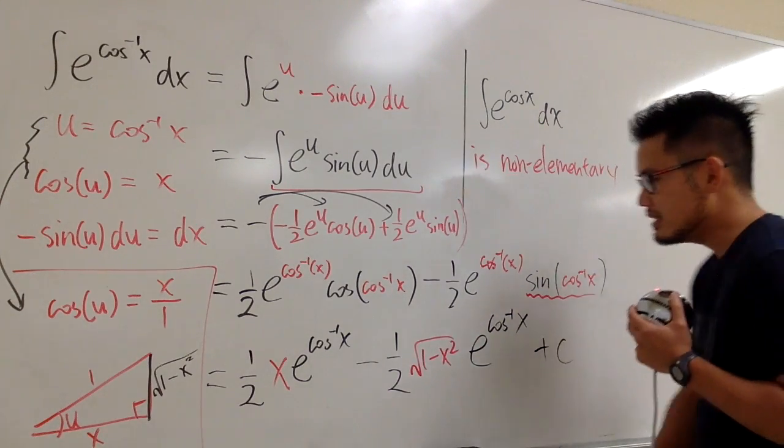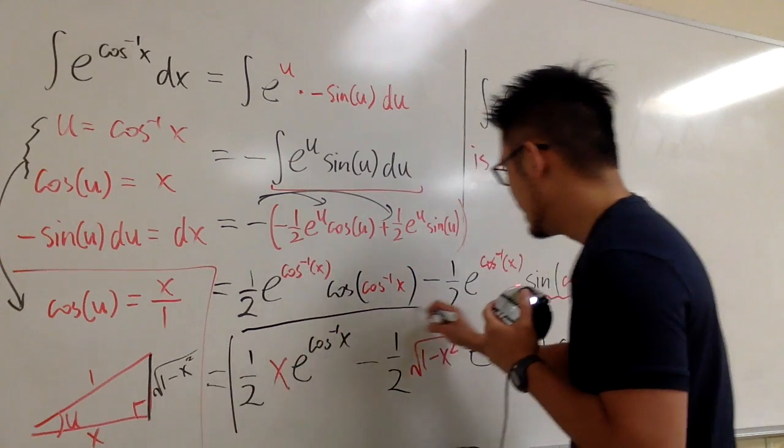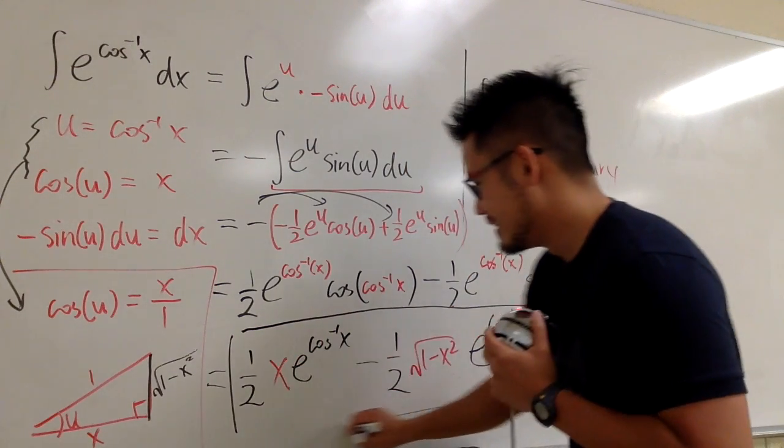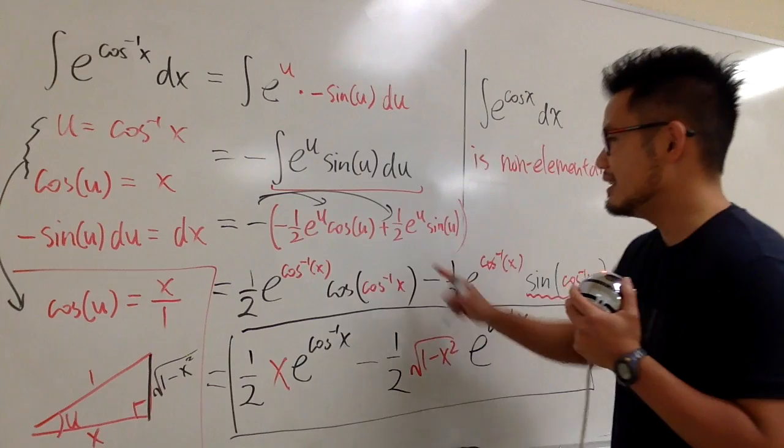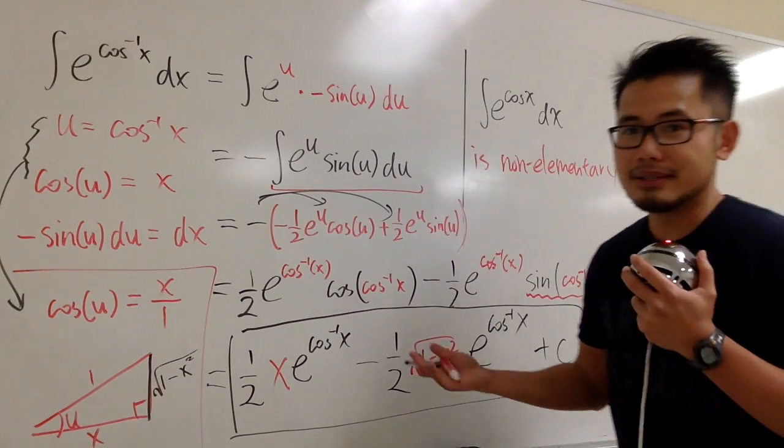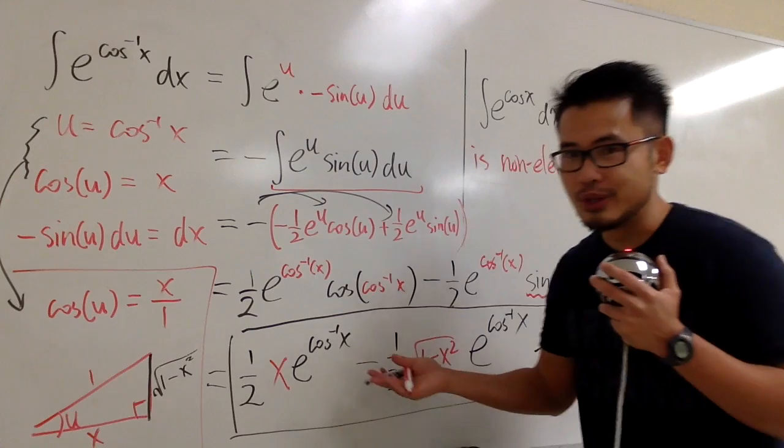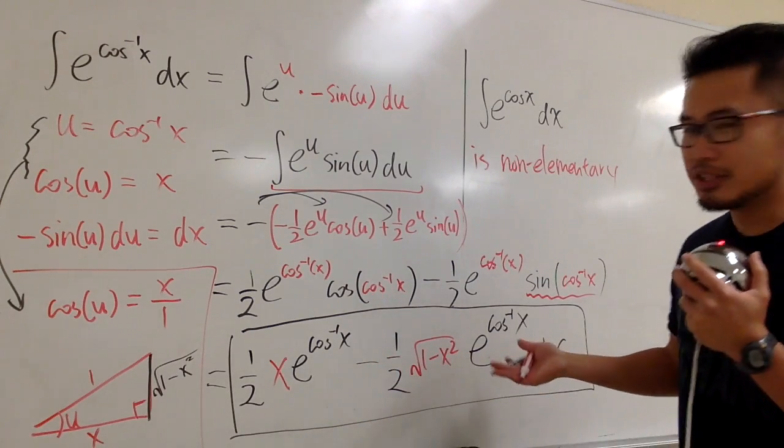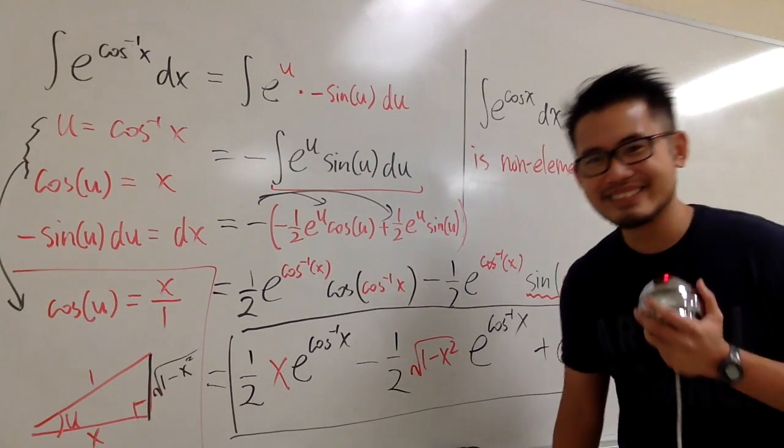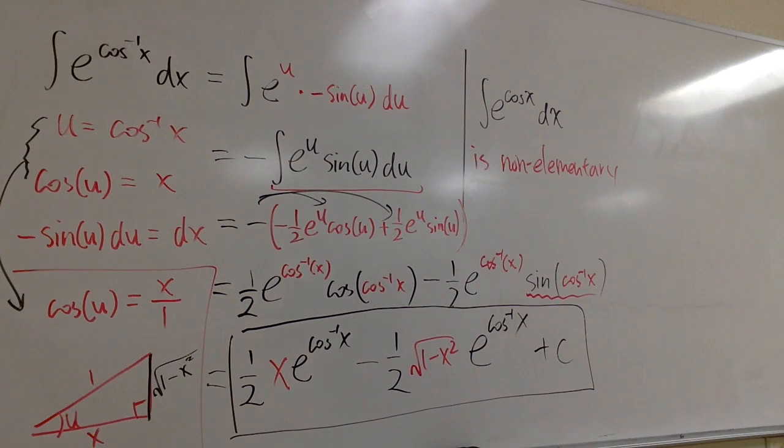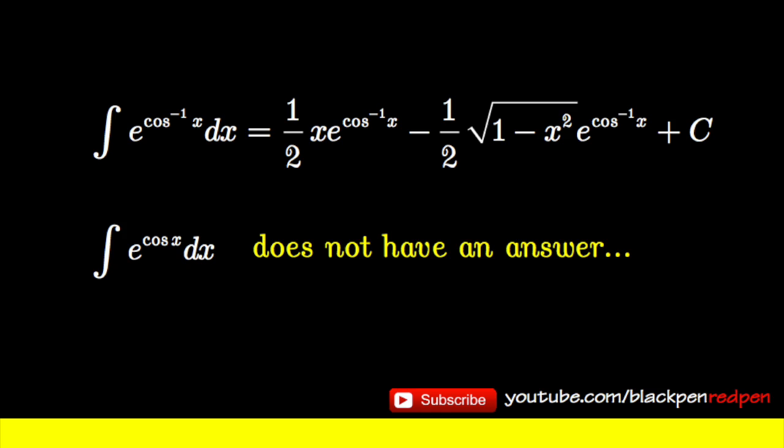At the end, we can definitely put plus c, and this is it. I know, sometimes I put parentheses around the inverse sine, sometimes I didn't, but it doesn't matter. If you're watching this video, you should know that shouldn't bother you too much. That's it.